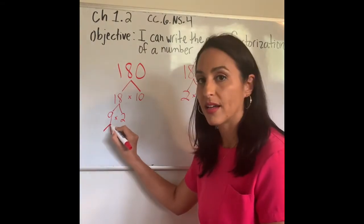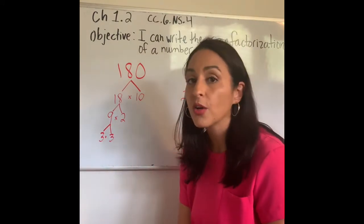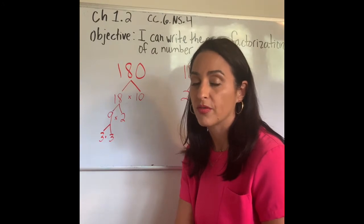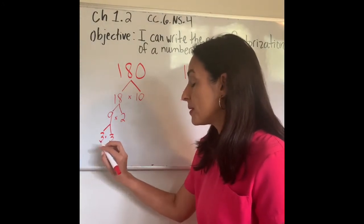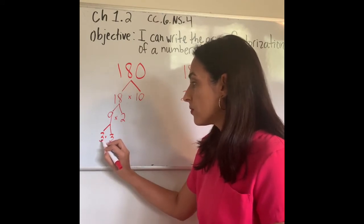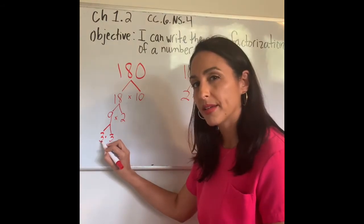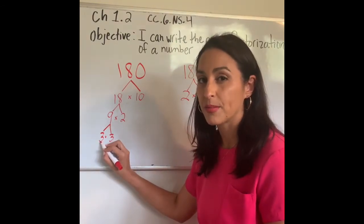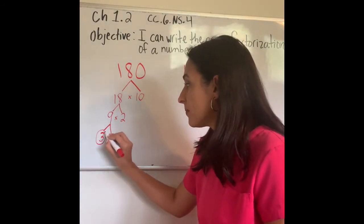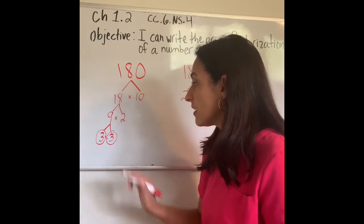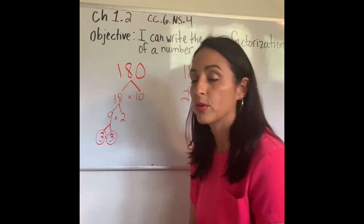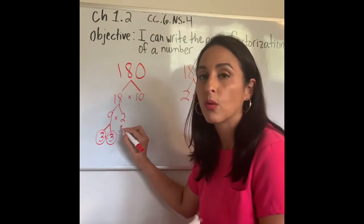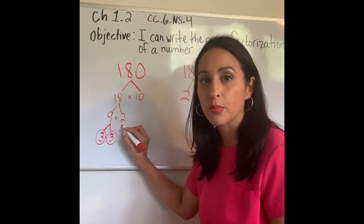Let's break down — decompose — 9. Three times three gives me 9. I'm not going to write 9 times 1 because it won't help me find prime numbers. So three times three. Is 3 prime or composite? It's prime — there's nothing I can multiply to give me 3 other than 3 times 1. I'm going to circle it; that's a prime number. What about 2? Is there anything I can multiply with 2 other than 2 and 1? No — so 2 is a prime number. I can circle it.